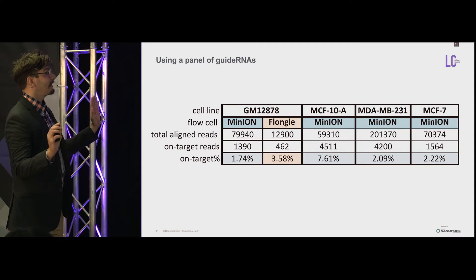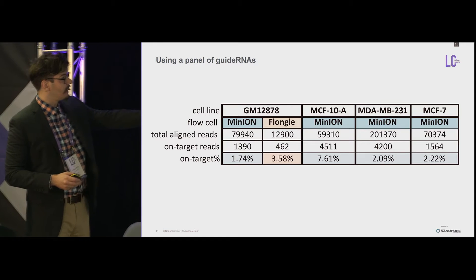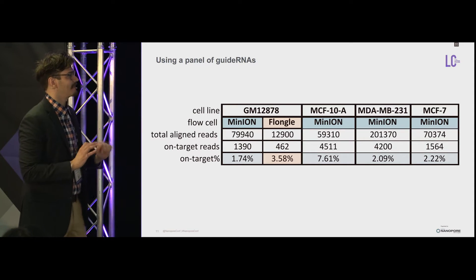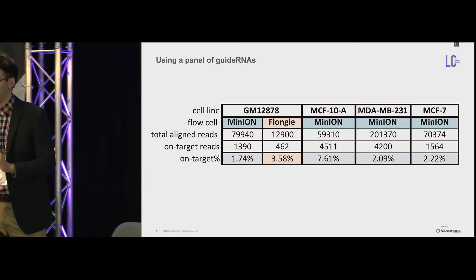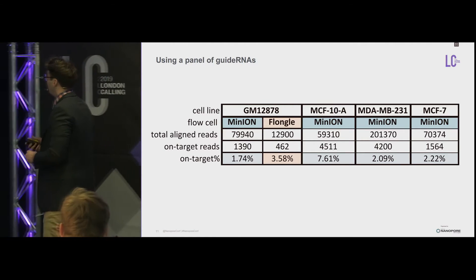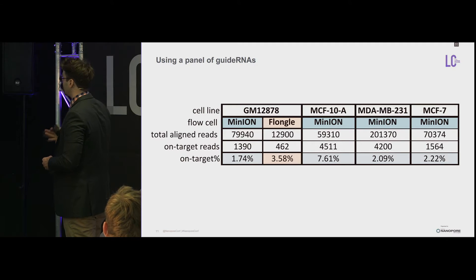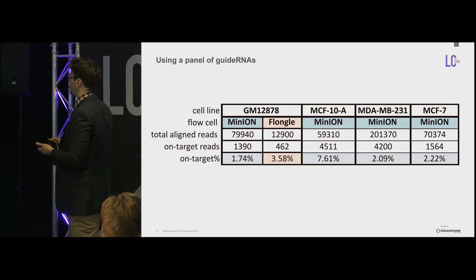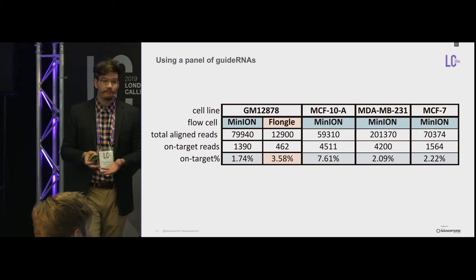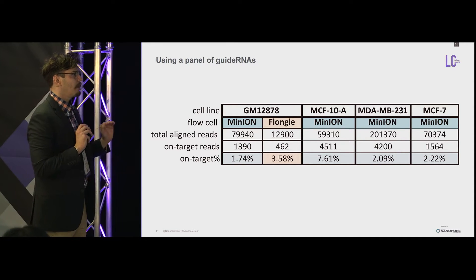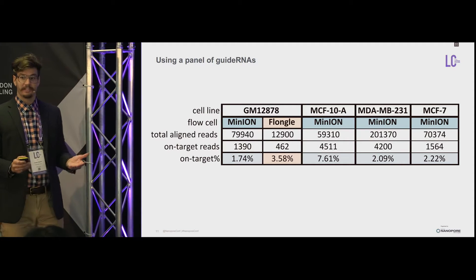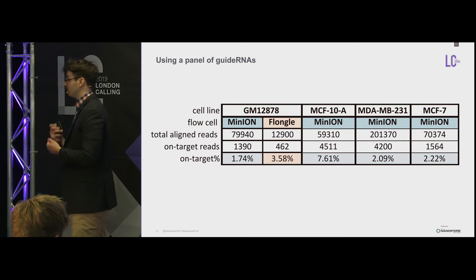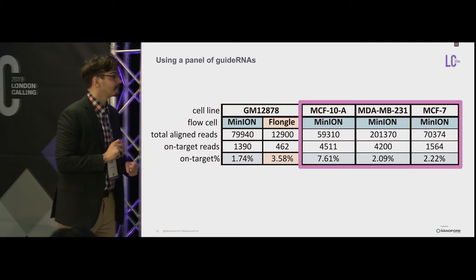Across all five sequencing runs, the three breast cell lines and the GM12878 cell line, we get a total of about 60,000 to 70,000 reads from the MinION flow cell. There is one outlier, the MDA-MB231, which we think is because that cell line is super aneuploid, so we're getting more reads. However, that increase in read number didn't translate to a proportionally larger increase in on-target reads. We get a huge amount of variability in on-target reads ranging from about 1,300 to 4,500, with an on-target fraction of about 2 to 7%. Systematic analysis of the off-target reads showed no evidence of off-target Cas9 cleavage — we think the DNA is getting broken during manipulation, causing ligation of sequencing adapters to those off-target sites.